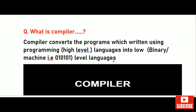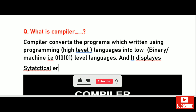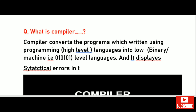The compiler converts high-level language into low-level language, and it also displays syntactical errors in the program. So we compile the program to convert it to low-level language, and our program's syntactical errors are also shown.